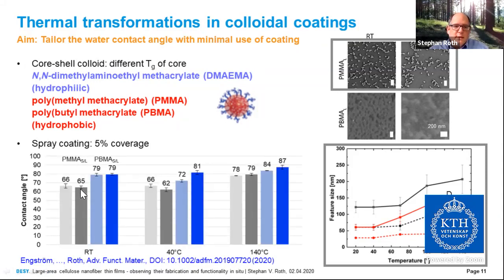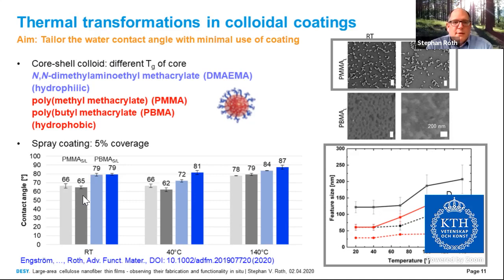Correlating this nanostructural change to the water contact angle, you can see that depending on the transformation temperature, we can tune the water contact angle to a desired value between 62 and 79 degrees centigrade. This is a very pictorial view of how you can visualize thermal transformation in colloidal coatings.